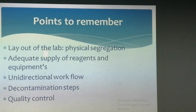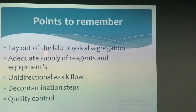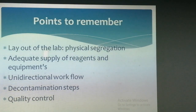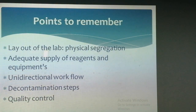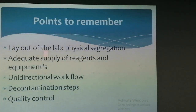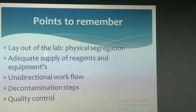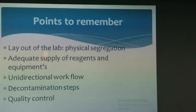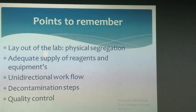Now, some points to remember during setup of a molecular lab. First, layout of lab — there should be adequate physical segregation. Secondly, there should be adequate supply of reagents and equipment for each particular section. Thirdly, rooms should be designed so there is unidirectional workflow inside the lab. Furthermore, decontamination provisions should be developed as it can become a major challenge later. Finally, quality control — it is to ensure both the reliability and accuracy of test results, and the QC process developed in the lab is crucial for the process of certification and accreditation.